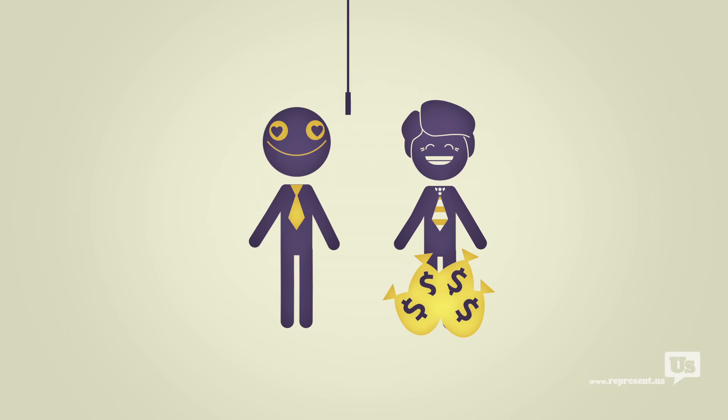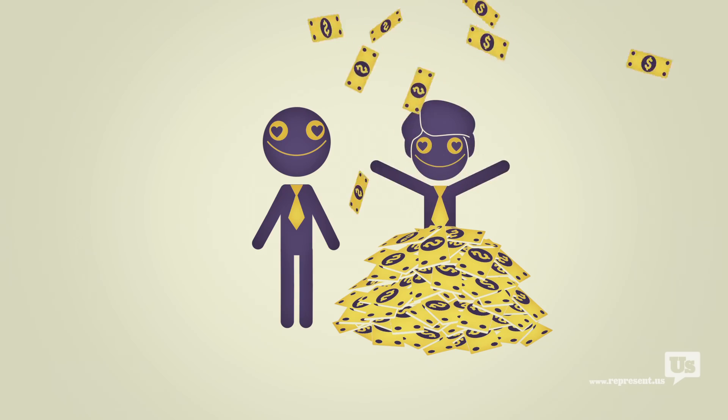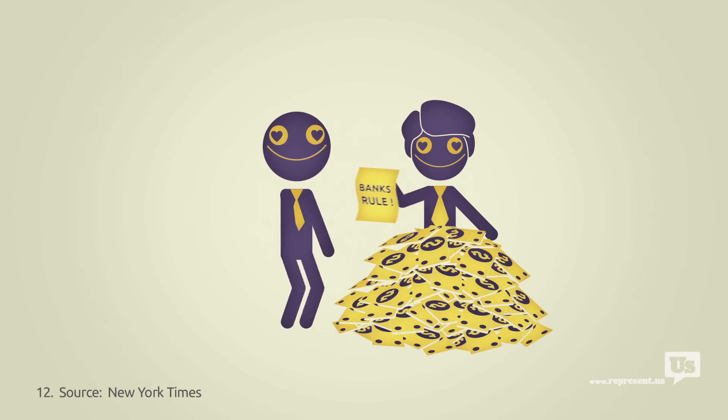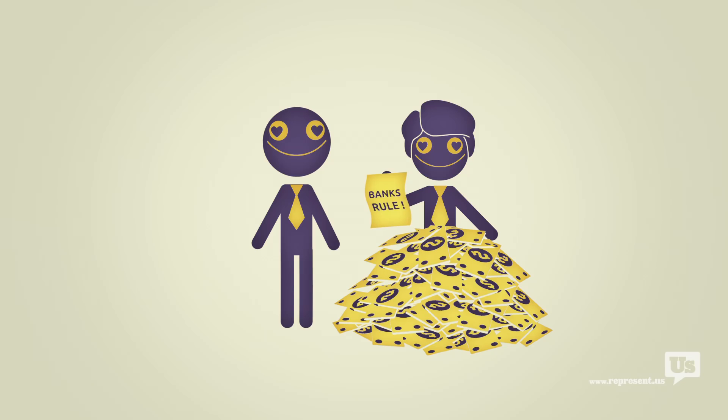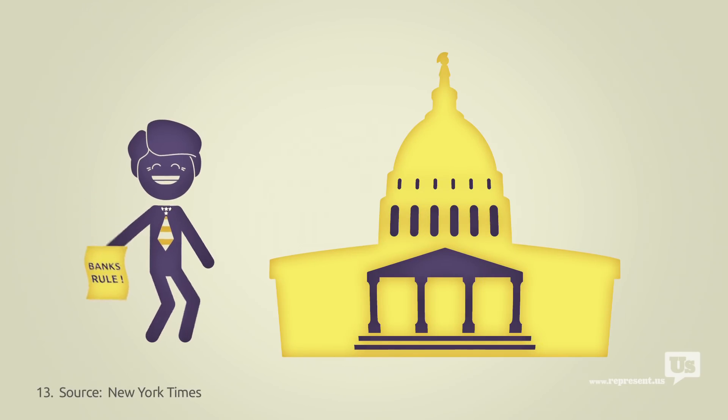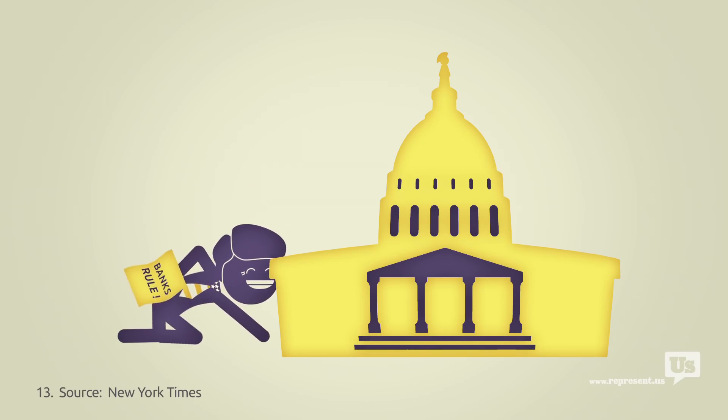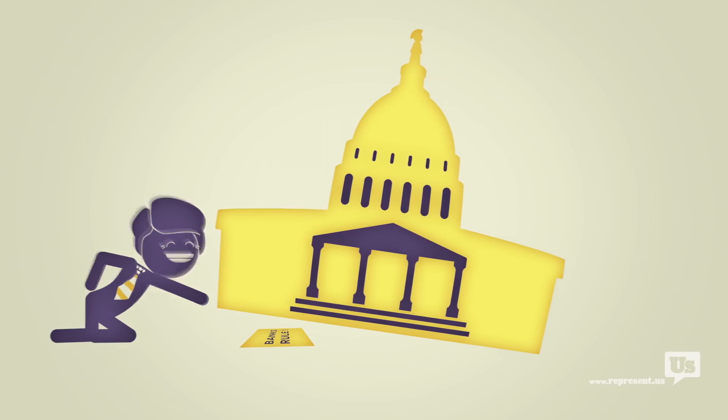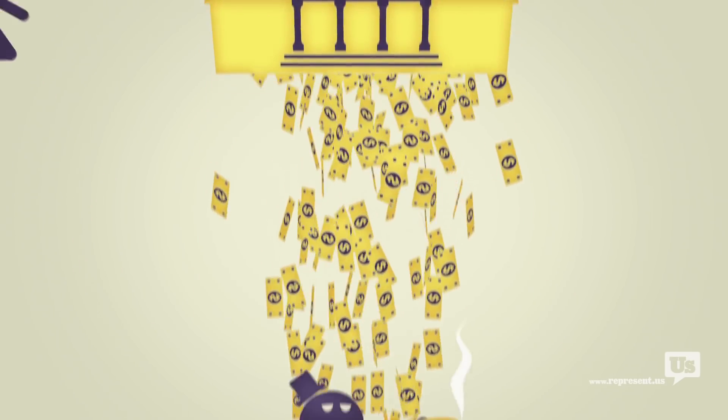It's perfectly legal for those lobbyists to offer those same politicians million-dollar jobs at their lobbying firm. Then, those lobbyists can literally write the language of this new bailout law themselves and hand it off to the politician they just buttered up with campaign money and lucrative job offers. And it's perfectly legal for those politicians to take the lobbyist written language and sneak it through Congress at the last second. So now you've got a law that greatly benefits the banks, and the whole process can start over.